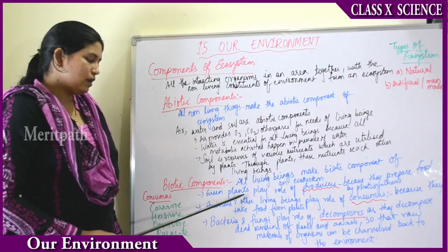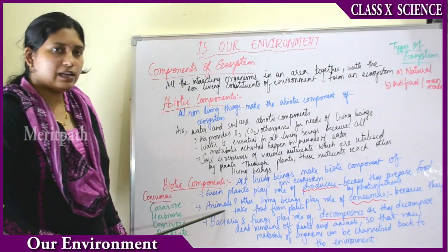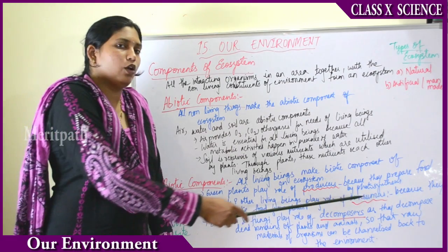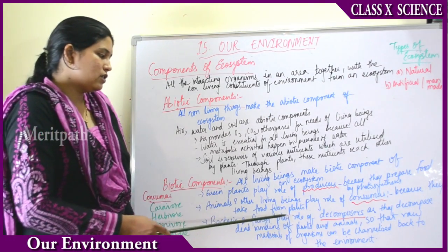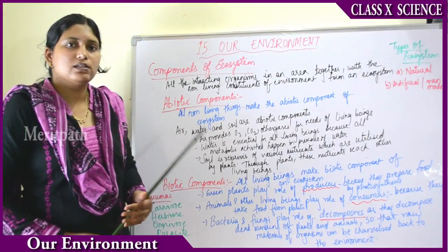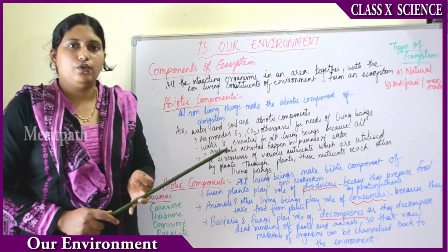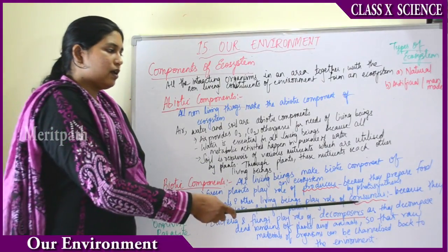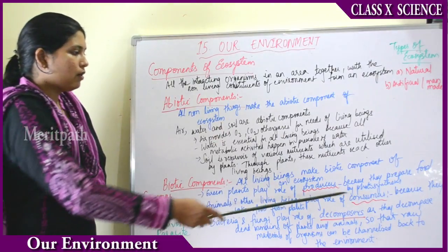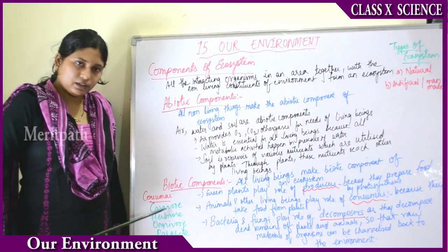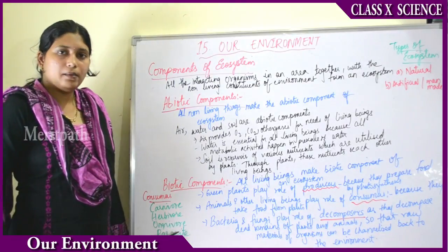Animals and living beings play the role of consumers because they eat plants and take food from them. Human beings and animals depend on plants for their food, so they are known as consumers — these consumers eat the producers. Consumers are of four types: carnivores, herbivores, omnivores, and parasites.